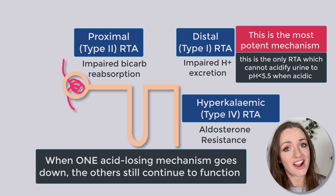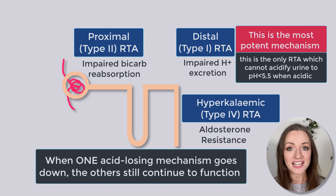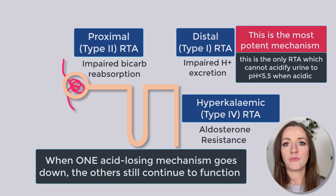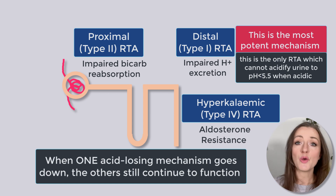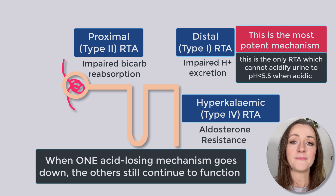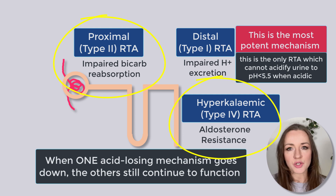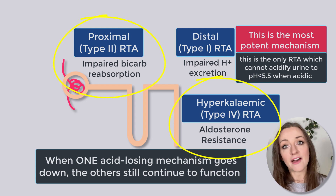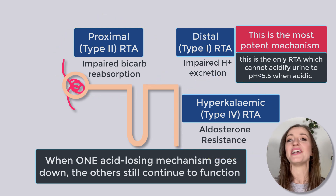But in type 2 and type 4 RTA, they can still acidify their urine because the distal mechanisms are still working. Your proximal tubule might be struggling with bicarbonate reabsorption, but the distal mechanisms will swoop in and save the day when that person is acidic. So with proximal RTA or type 4 RTA — which involves aldosterone resistance — you're still going to be able to acidify your urine to a pH below 5.5 because you don't have type 1 RTA.